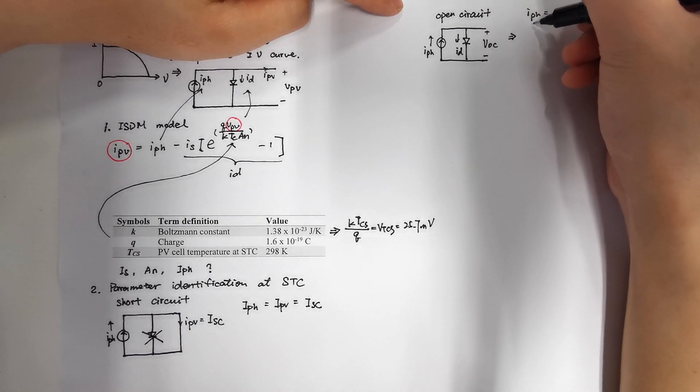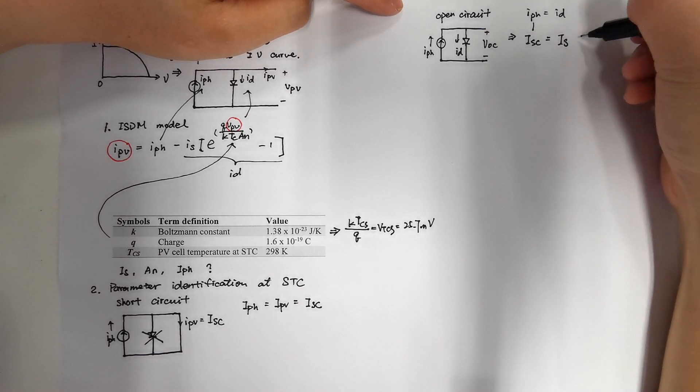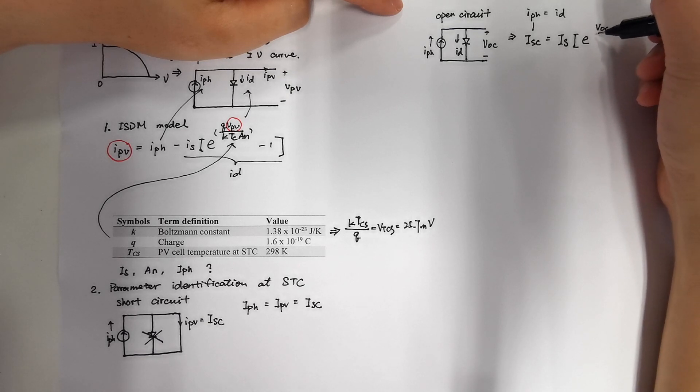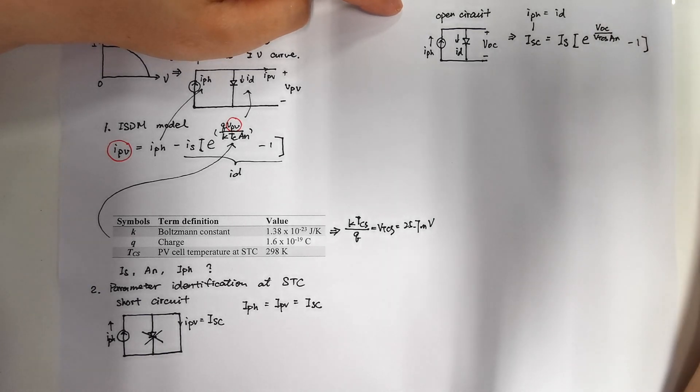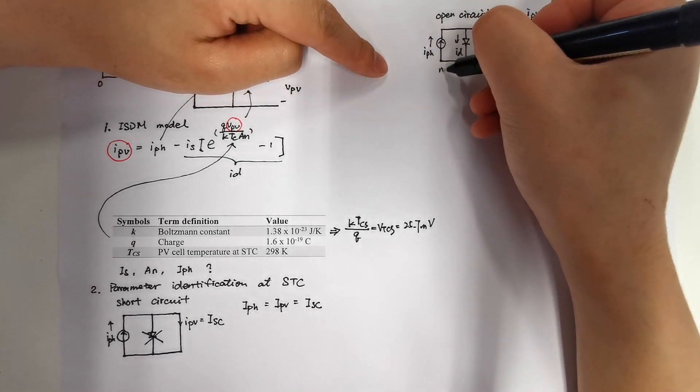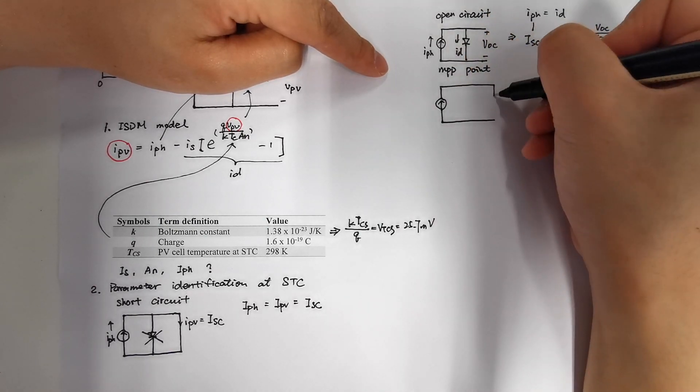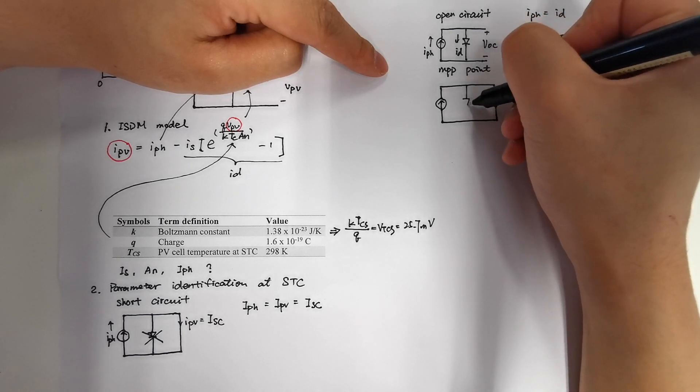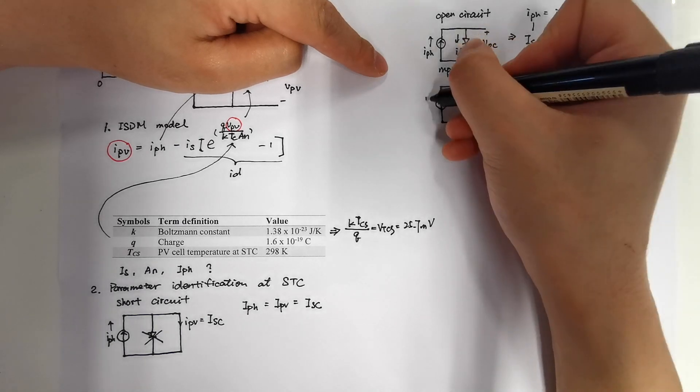Then we put our model into open circuit. So now our IPH equals to ID and our IPH already calculated as the last step is ISC. So the equation becomes ISC equals to IS times e to the power of VOC, which is our open circuit voltage divided by VTCS times AN minus 1. And this equation cannot solve anything so we need to put a load at the terminal of our model to make our model work at MPP point.